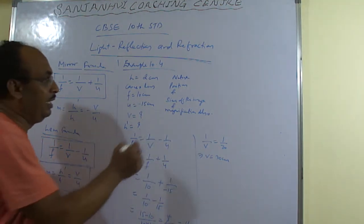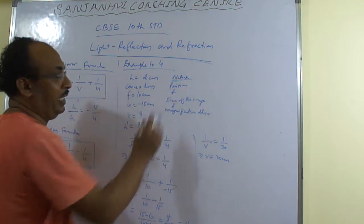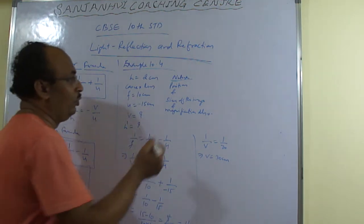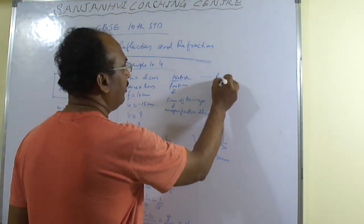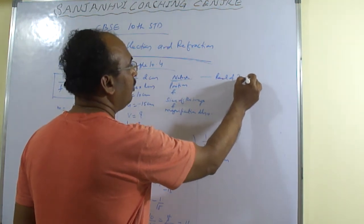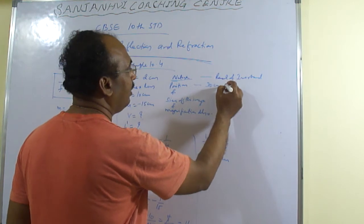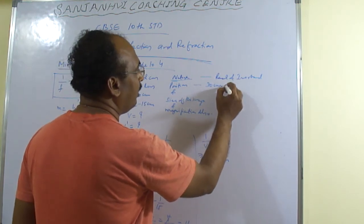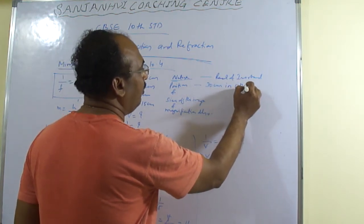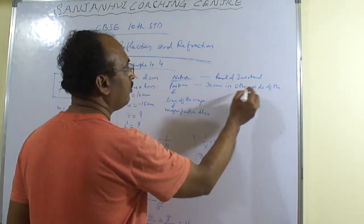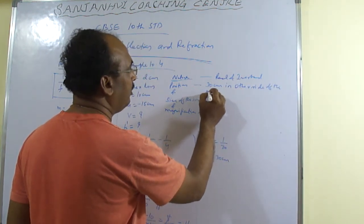So what you can say? Nature. What type of nature it will be? Real and inverted. Convex lens is there. It is real and inverted. So you can say it is real and inverted. Then 30 cm in other side of the mirror.